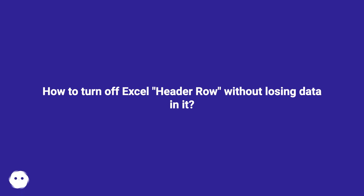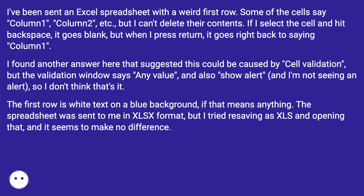How to turn off Excel header row without losing data in it. I've been sent an Excel spreadsheet with a weird first row. Some of the cells say column 1, column 2, etc., but I can't delete their contents.